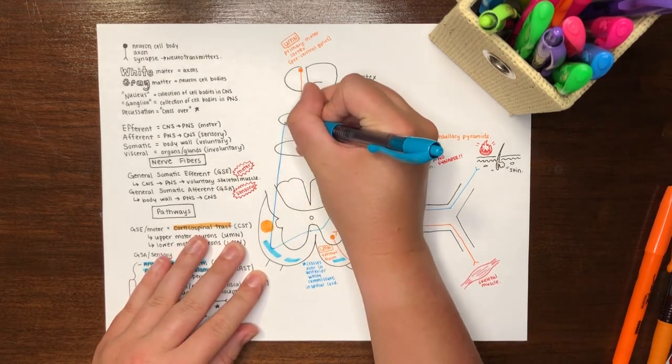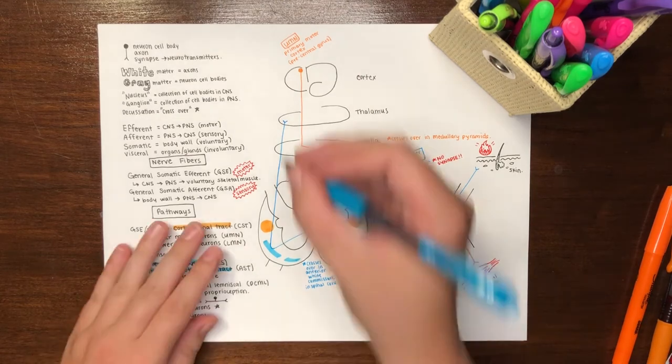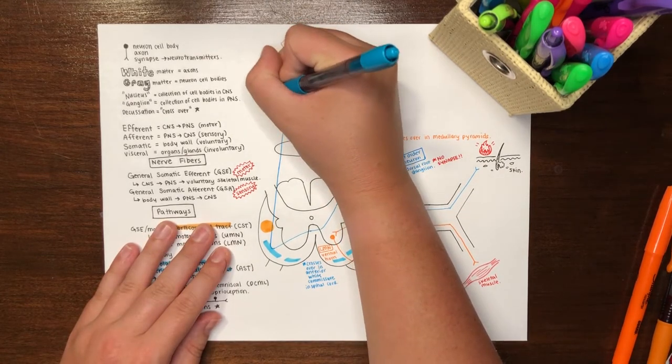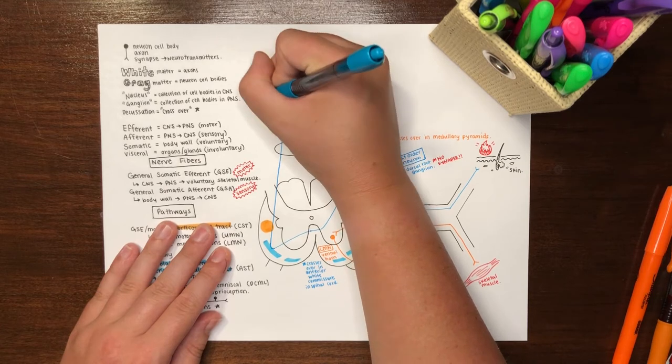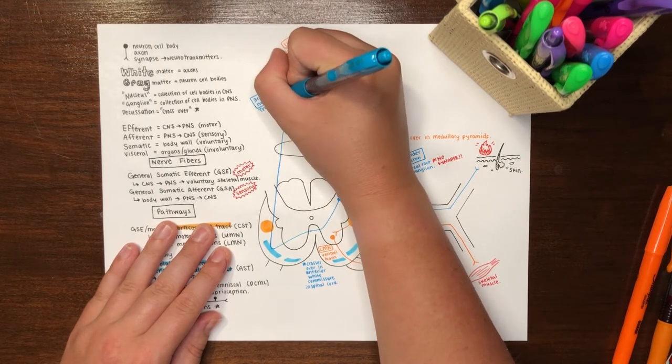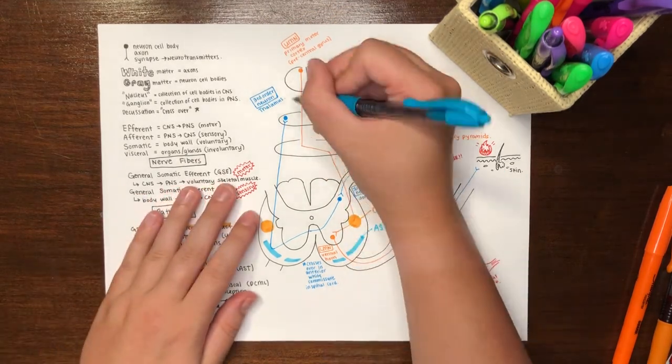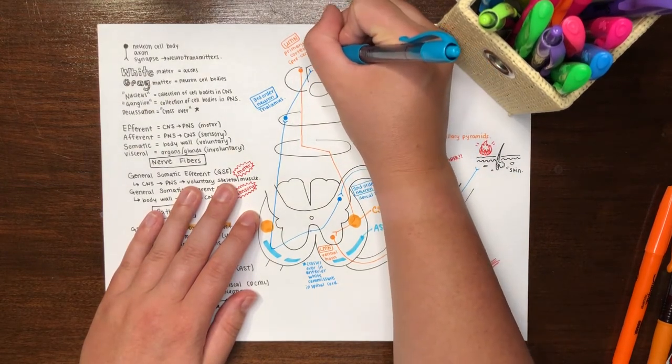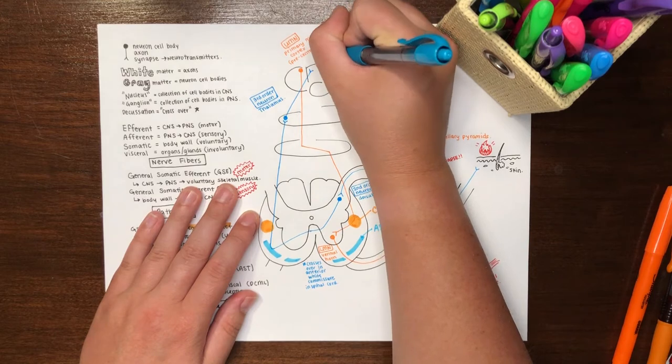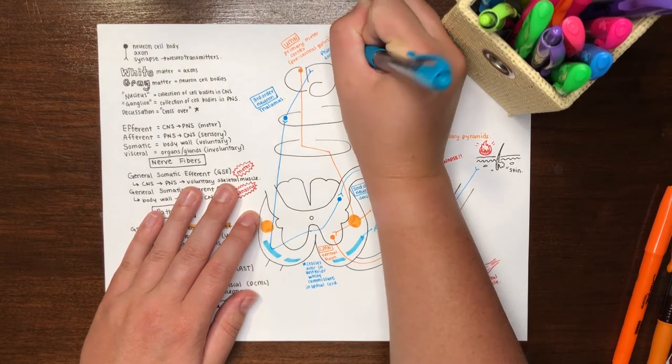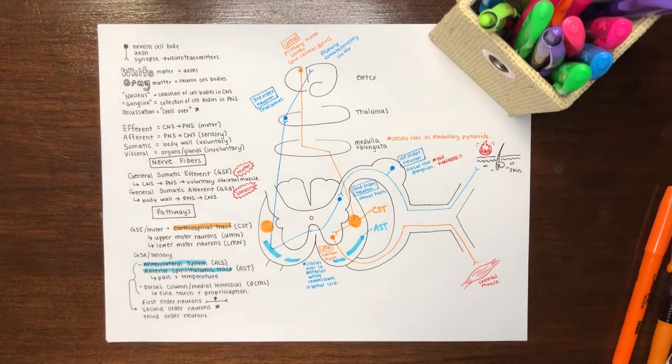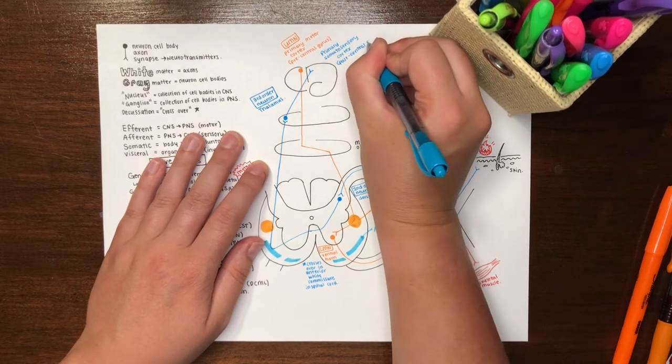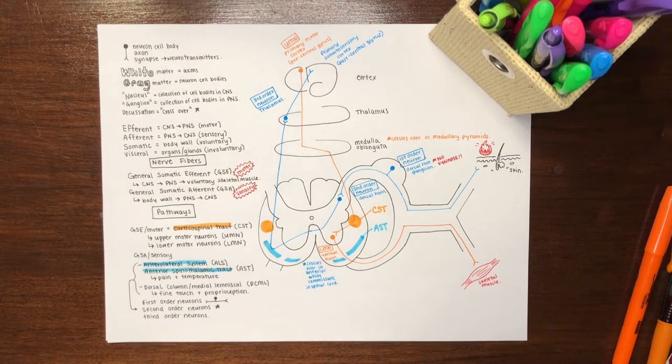More specifically, the VPL nucleus. There, it will synapse onto a third-order neuron. This third-order neuron will carry the signal to the primary somatosensory cortex, located posterior to the central sulcus, in what is also called the postcentral gyrus. The last pathway that we will draw in this video is the DCML.